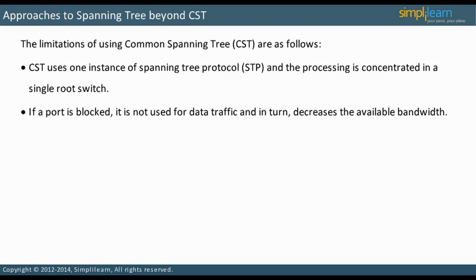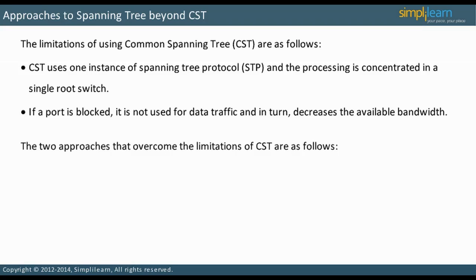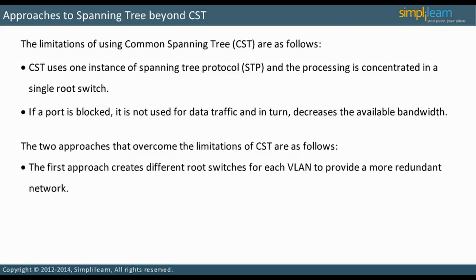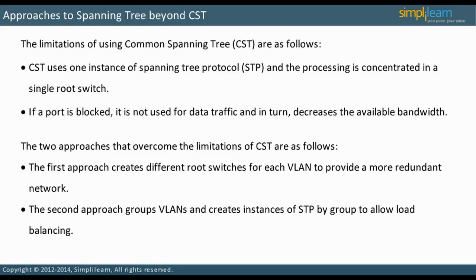To overcome these limitations, STP versions that accommodate multiple instances of spanning tree are developed. These allow load balancing. There are two approaches: the first is to create different root switches for each VLAN, which distributes processing requirements among different switches but duplicates root switch processing for each VLAN. Another approach is to group VLANs and create instances of STP by group. In the next slide, let us discuss STP implementations that use these approaches.